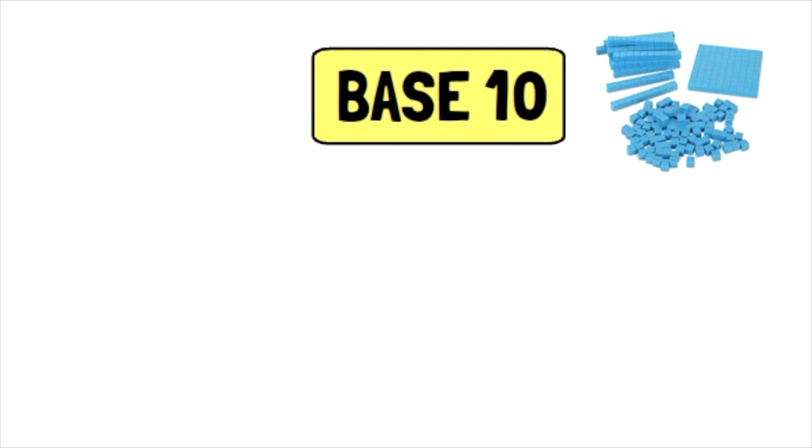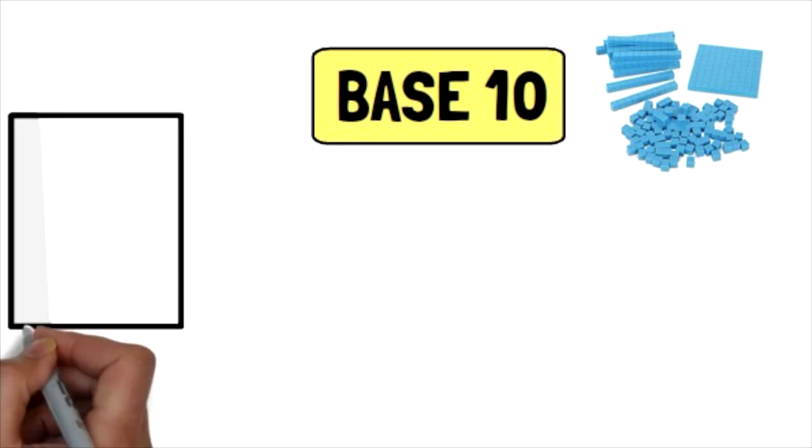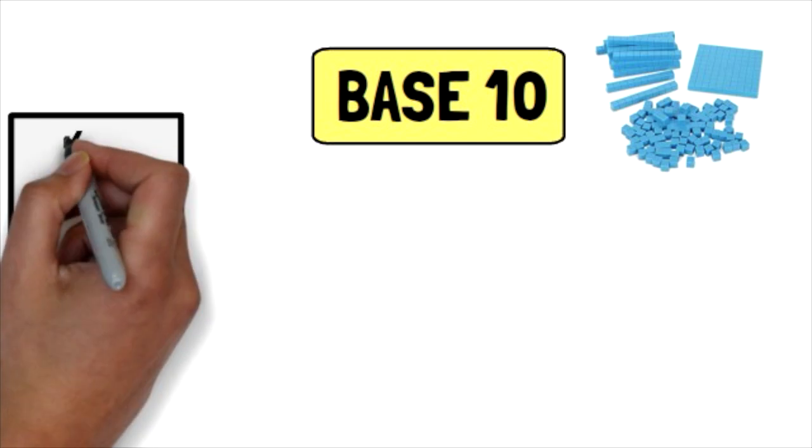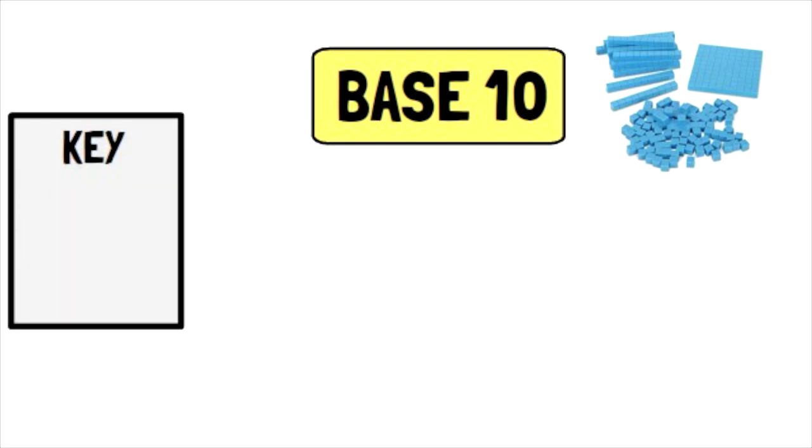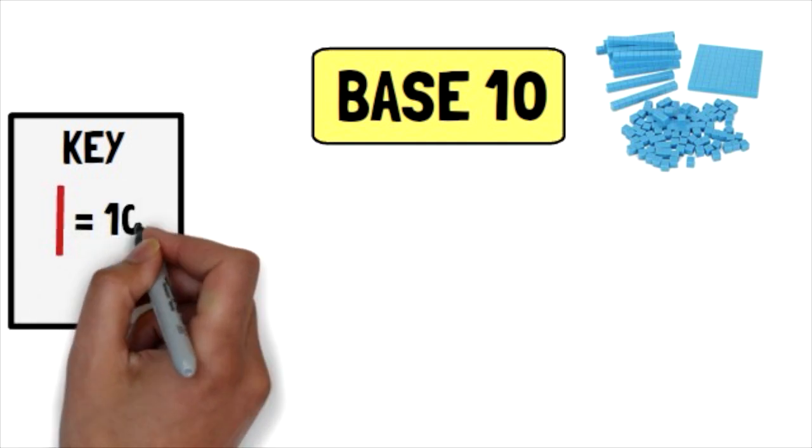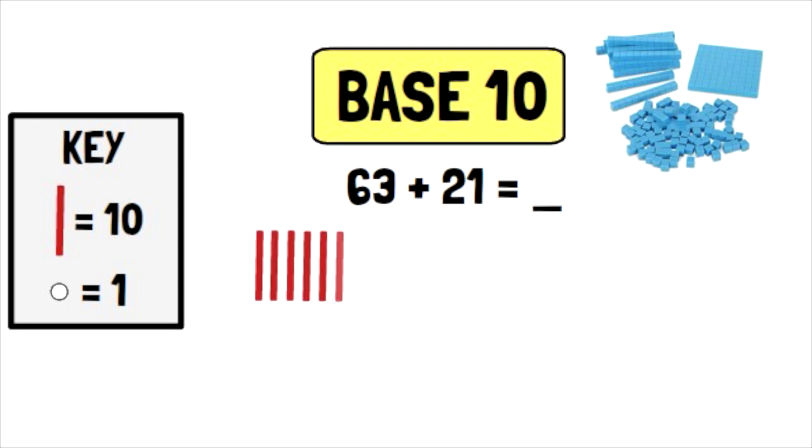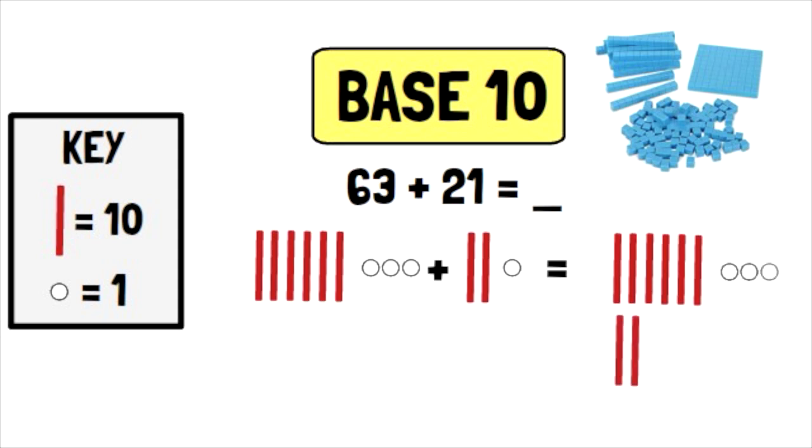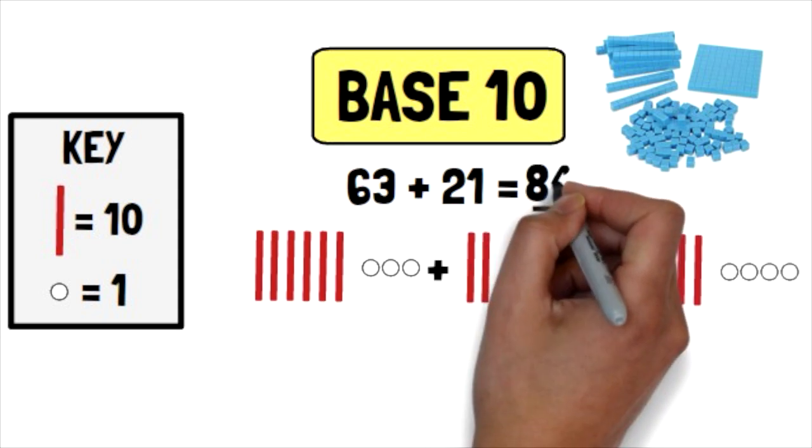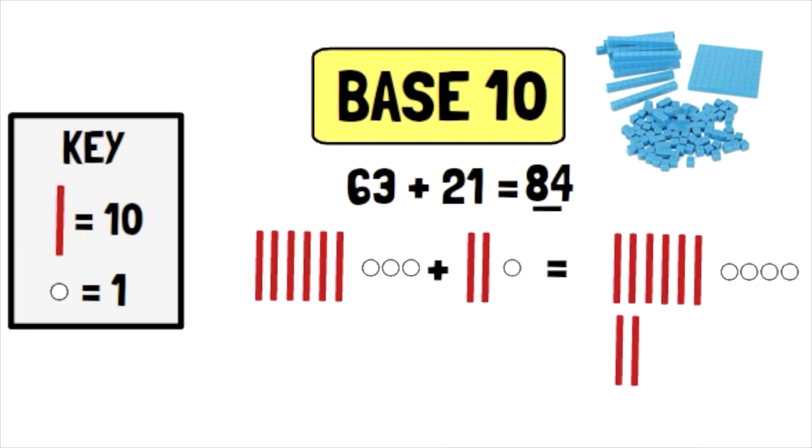Next, what this strategy does is it makes a symbolic representation of base 10 blocks that your child can draw in order to solve double-digit equations. So, in the key I have here, you can see that a single line is equal to one group of 10, and a single dot is equal to 1. What your child would do if using this strategy is they would draw out 63 plus 21, and they would do 6 straight lines and 3 dots to show 63. Then they would add 2 lines and 1 dot to represent 21. In the end, they would count up all of the lines and all of the dots, and they would get the answer of 8 tens, or 8 lines, and 4 dots, or 4 ones, which is 84.